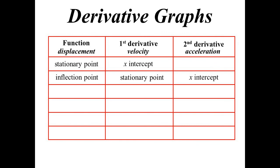At that t-value, we'll have a stationary point on the velocity graph, and on the acceleration graph we'll have a t-intercept — because time is our horizontal axis. When the original graph is increasing, the first derivative is positive, so the velocity graph will be above the axis.